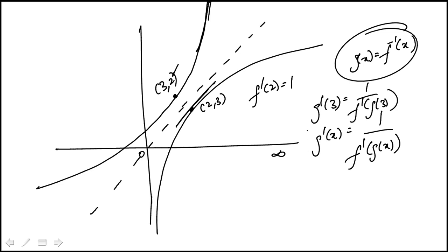Now, g of 3 is 2, so you can already anticipate what this will be. That's just 1. So g prime of 3 is also 1. So what we're looking for,